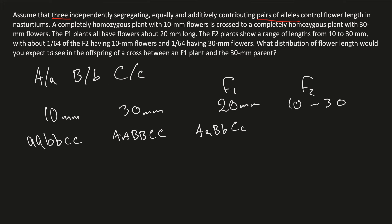About 1/64th of the F2 have 10mm flowers and 1/64th have 30mm flowers. That makes sense because you have a 1/4 chance of being homozygous for one gene. So if you're homozygous recessive, it's 1/4 × 1/4 × 1/4, which multiplies to 1/64th. That makes perfect sense.